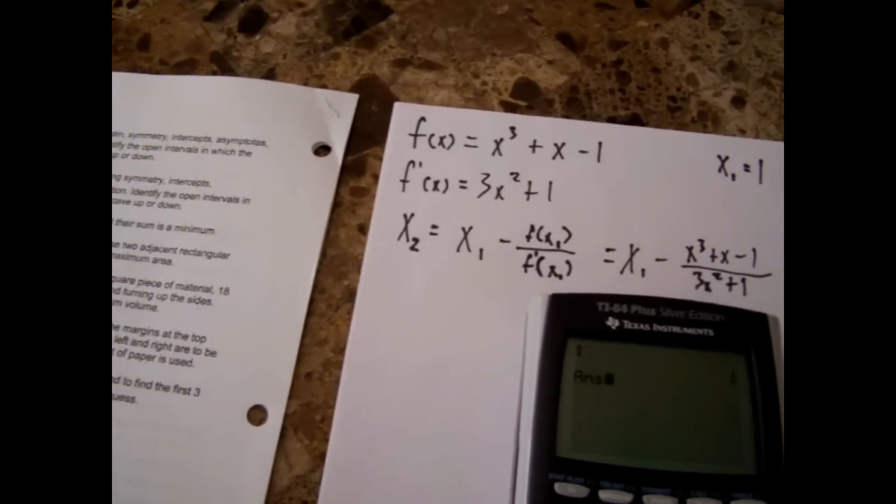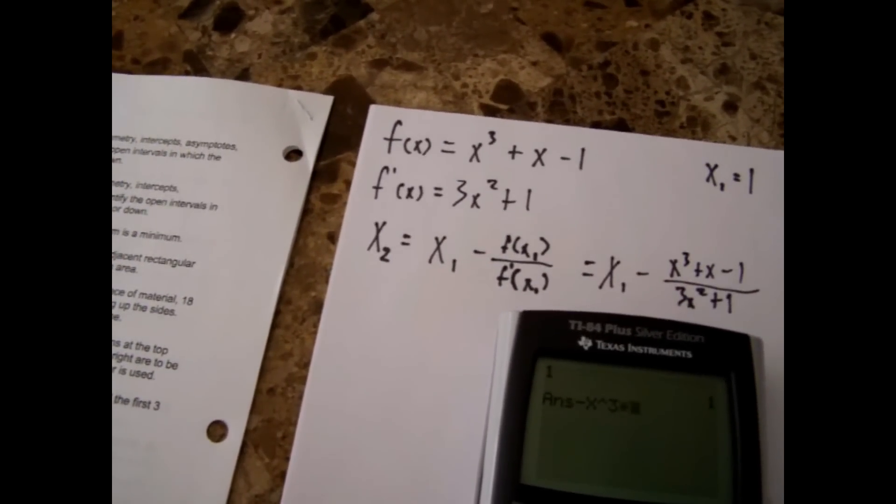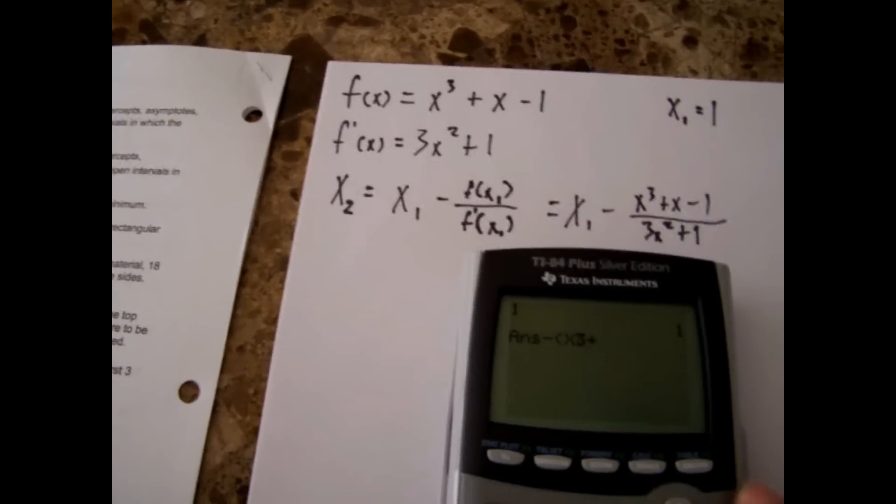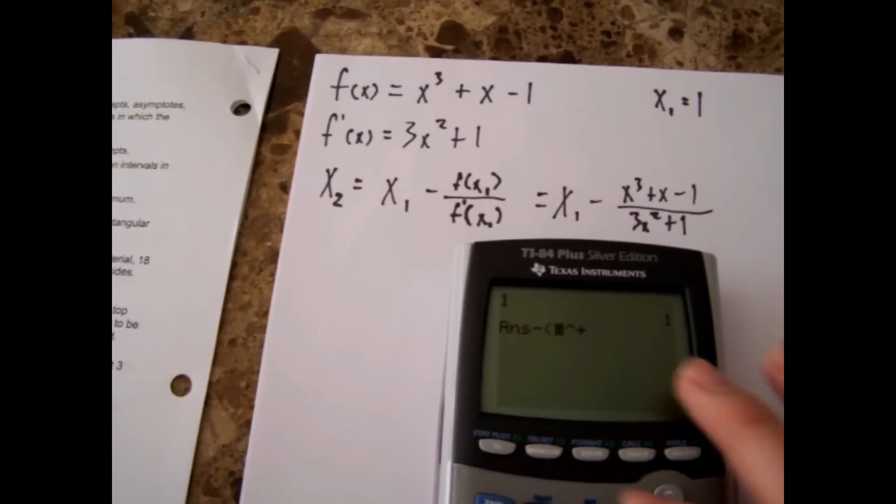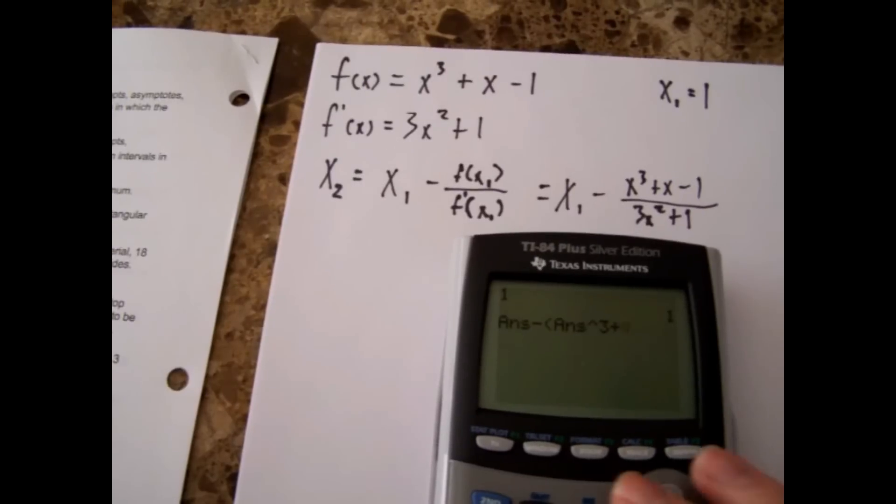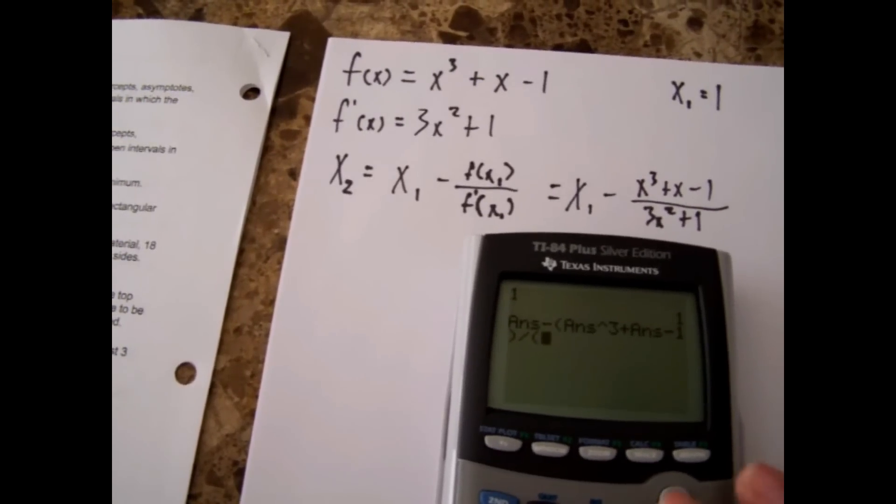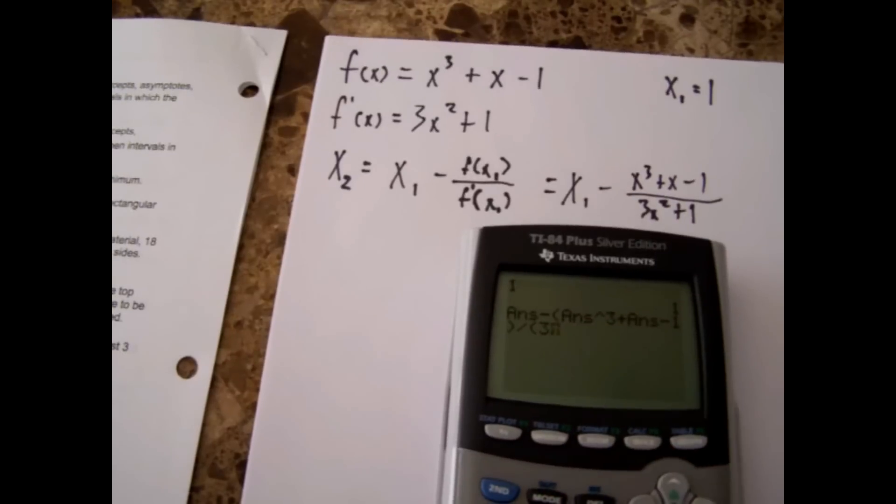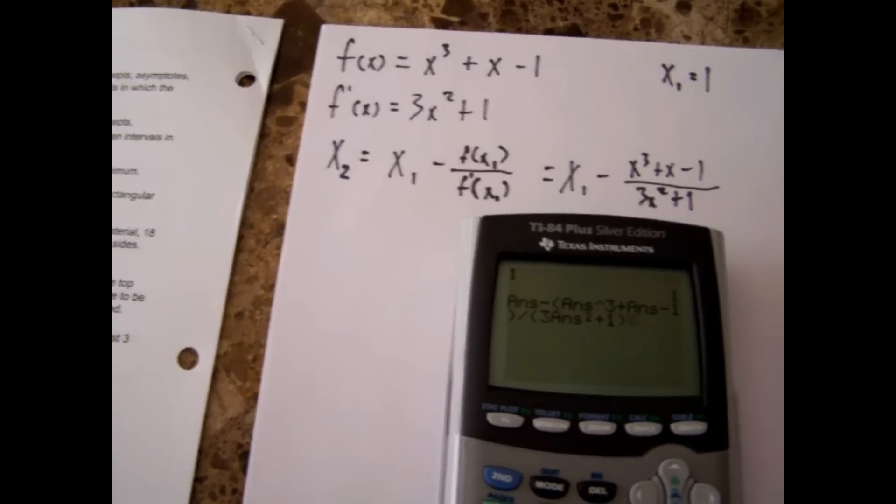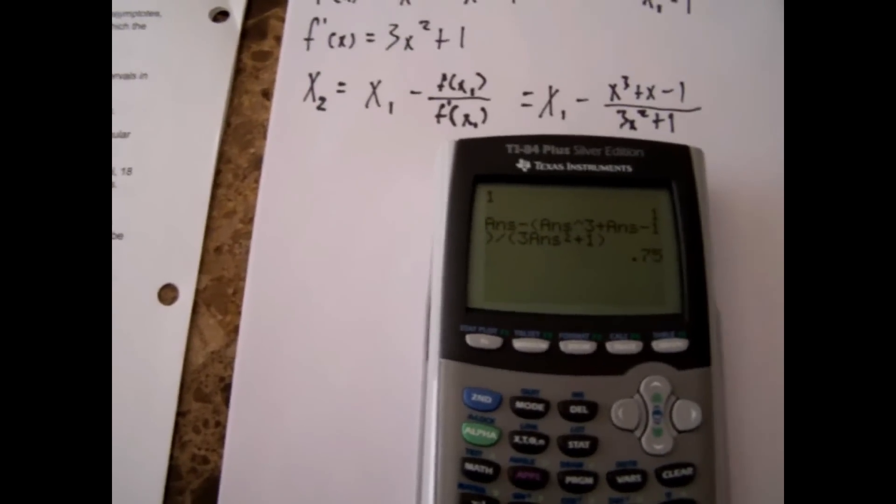Alright after that you just plug in your function. Oops, forgot parentheses. Oh yeah you can't be using x, keep using answer instead of x. And put that all over your f prime. Alright. Now hitting enter on this will give you your first iteration or your x₂ which will be 0.75.